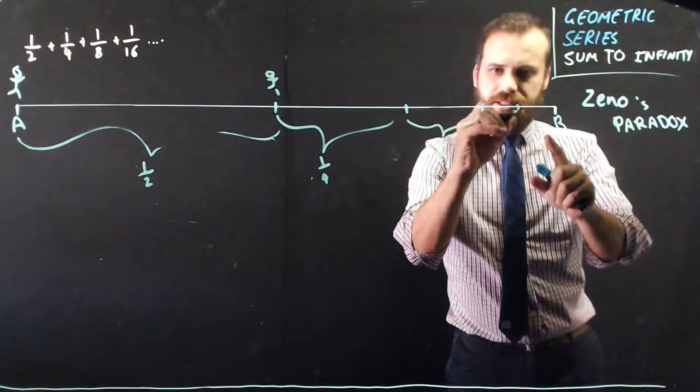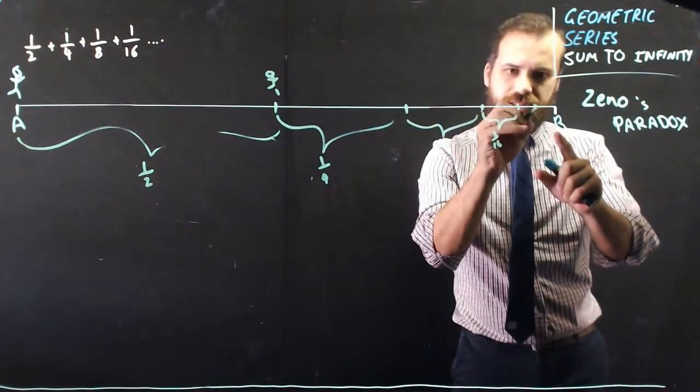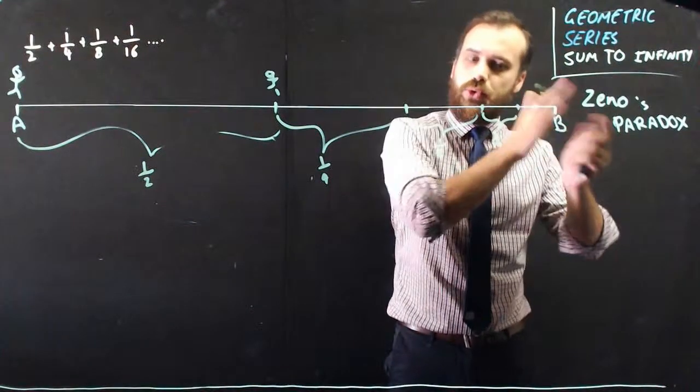And then he needs to travel half of this distance, which is one-sixteenth. And then half of this distance, which is one-thirty-two. And then half of that distance, half of that distance, half of...